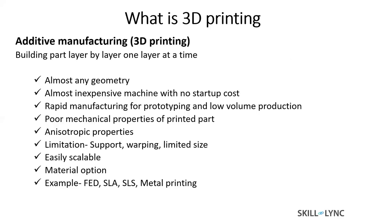The next method to consider is additive manufacturing, which is totally different from any traditional method. It is also called 3D printing or rapid prototyping. In additive manufacturing or 3D printing, you add your part layer by layer, one layer at a time. You can almost make any geometry with 3D printing. It is super easy to do. Machines are almost inexpensive — there are some expensive industrial-scale machines, but most machines are not that expensive compared to other manufacturing machines. It is really good to use 3D printing when you are at a prototyping scale or when you want to do really low volume production.